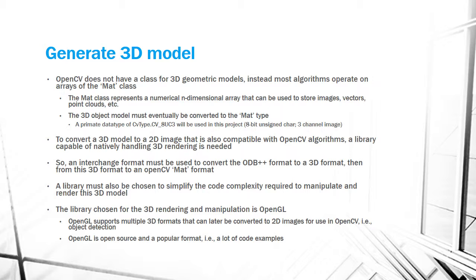OpenCV does not have a class for 3D geometric models. Instead, most algorithms operate on arrays of the MAT class, which represents a numerical n-dimensional array used to store images, vectors, point clouds, etc. The 3D object model must eventually be converted to the MAT type. To convert a 3D model to a 2D image compatible with OpenCV algorithms, a library capable of natively handling 3D rendering is needed. An interchange format must be used to convert ODB++ to a 3D format, then from that 3D format to an OpenCV MAT format, with a library to simplify the code complexity required to manipulate and render the 3D model.